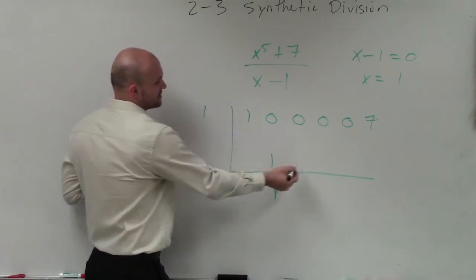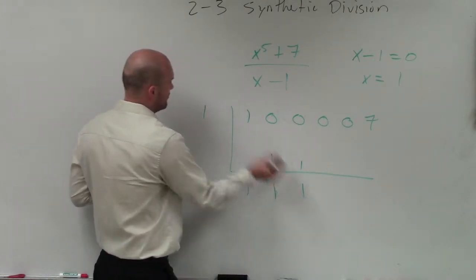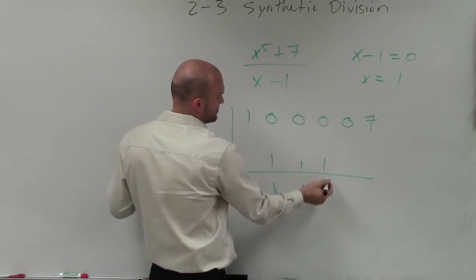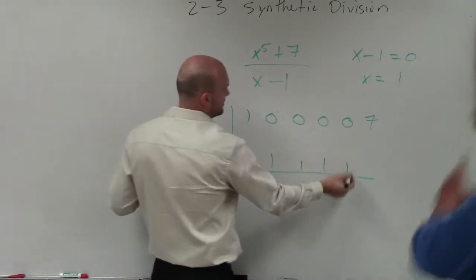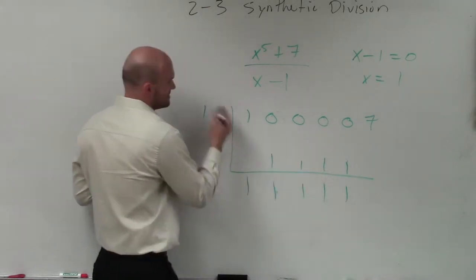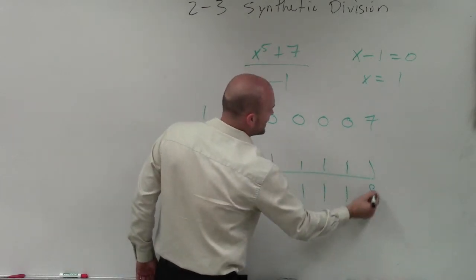One times one is one, zero plus one is one, zero plus one is one, zero plus one is one, one times one is one, one times one is one, seven plus one is eight.